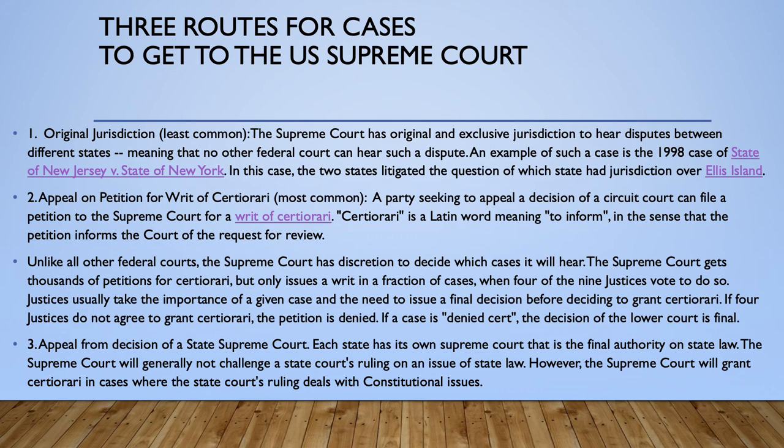The very least common is that of original jurisdiction. The Supreme Court has original exclusive jurisdiction — that is, they act like a trial court — between disputes between different states, such as a boundary dispute. In fact, there was a case in the U.S. Supreme Court in 1998 with New York and New Jersey suing one another over the question of who has jurisdiction over Ellis Island.